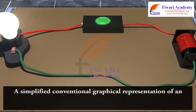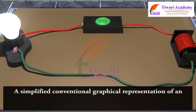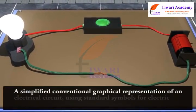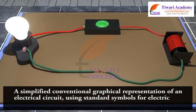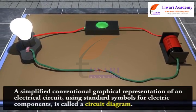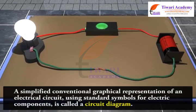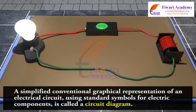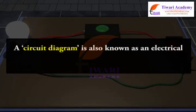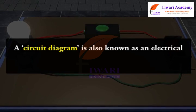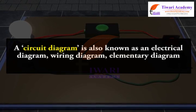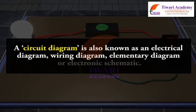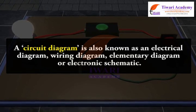A simplified conventional pictorial representation of an electric circuit using standard symbols for electric components is called a circuit diagram. A circuit diagram is also known as an electrical diagram, wiring diagram, elementary diagram, or electronic schematic.